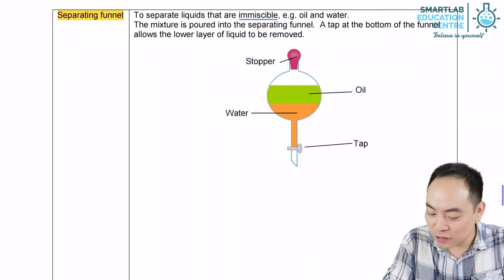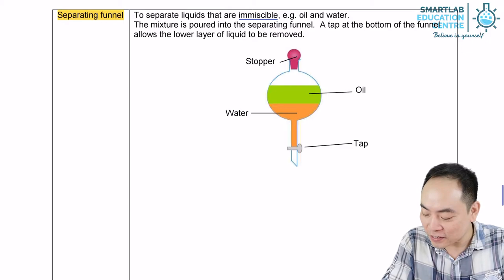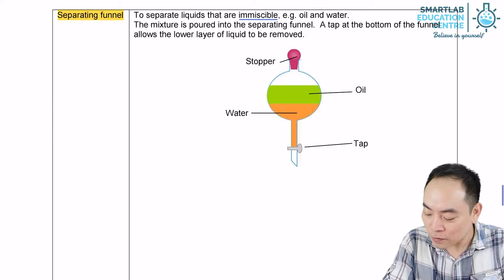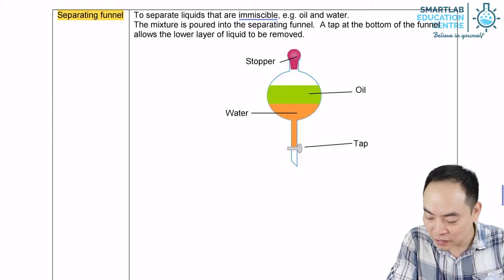Liquids that do not dissolve in each other and separate into different layers are described as immiscible. Oil and water are immiscible to each other.